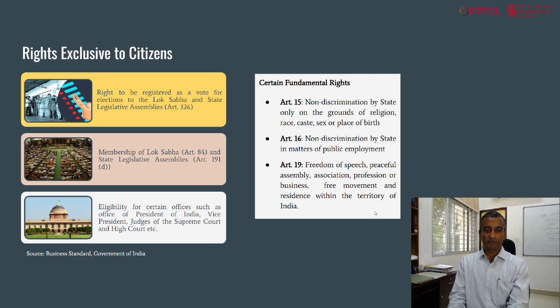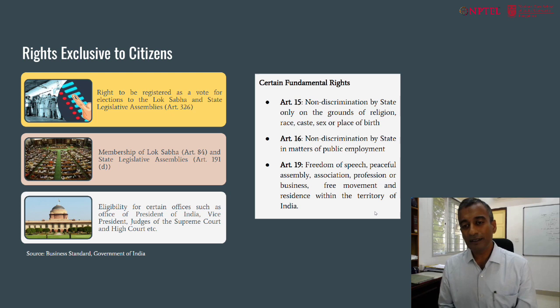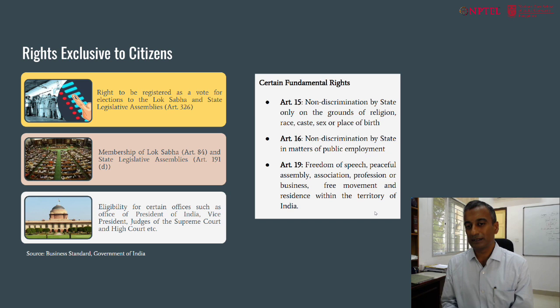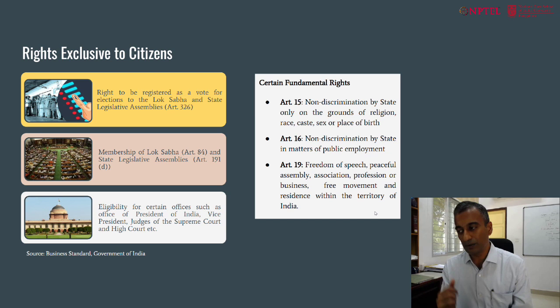What are the rights exclusive to citizens? Some fundamental rights — for example, Articles 15 and 16, non-discrimination rights on the basis of religion, race, caste, sex or place of birth — are guaranteed to citizens only. Similarly, the Article 19 freedoms — freedom of speech, peaceful assembly, association and so on — are guaranteed only to citizens. The fundamental rights chapter thus gets divided up into those provisions that are guaranteed to non-citizens and certain protections that are guaranteed only to citizens.